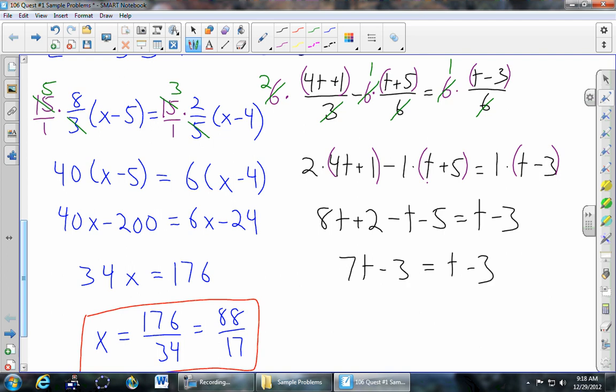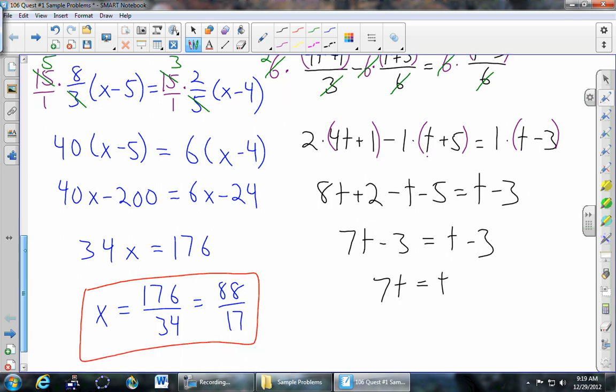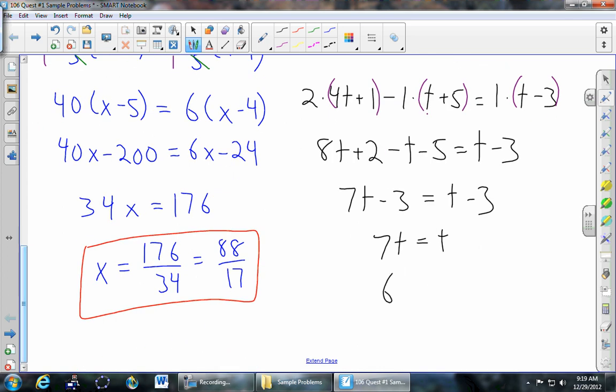We'll add 3 to both sides. So we get 7t equals t. And then we'll subtract t from both sides. We want to get all those t's over to the one side. So when we subtract t, we get 6t equals 0. Which is perfectly okay.